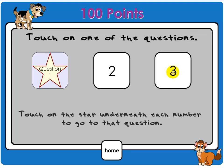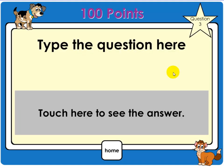In this case, if they touch on question number 3, the cover is removed and then they touch on the star to go to that question page.